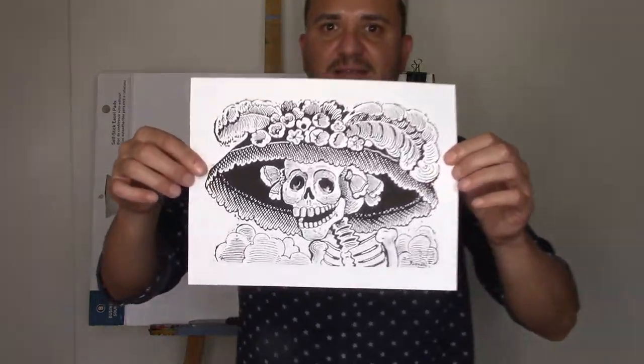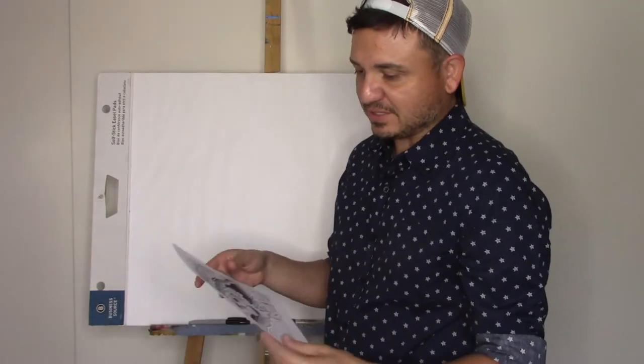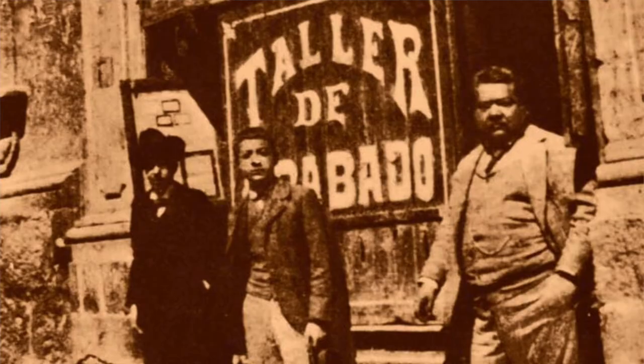We are going to talk about Jose Guadalupe Posada and you're probably like who was that. You've already seen his work and a lot of people have been influenced by his work. He was the one that created what we know now today as the Day of the Dead Katrina.